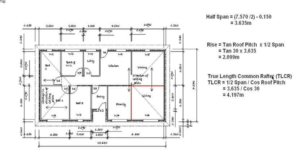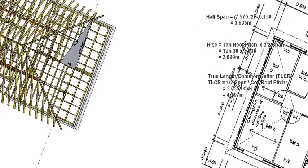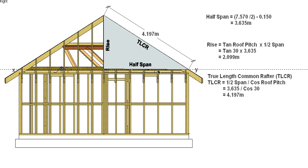We also need to work out the true length of the common rafter. You can use Pythagoras with the half span and the rise — it's basically the hypotenuse of the triangle. In this case I'm going to use the half span divided by cos of the roof pitch, which gives the same answer. So 3.635 divided by cos(30°) gives us 4.197m — that's from the centre line of the ridge to a line directly above the outside of the wall, or the back of the bird's mouth. We also need to add the overhang to this.